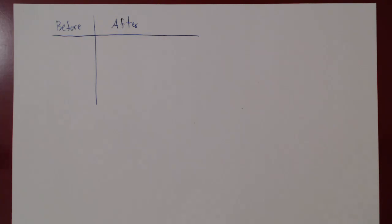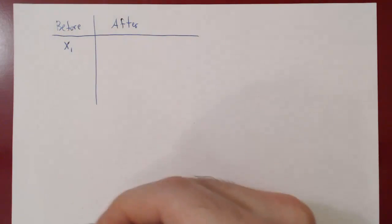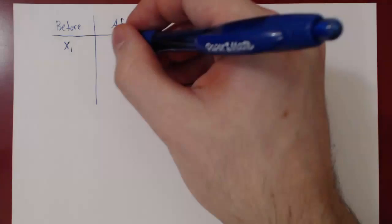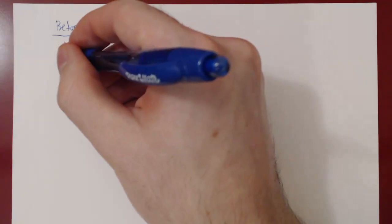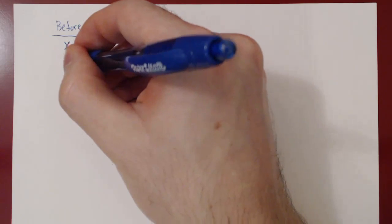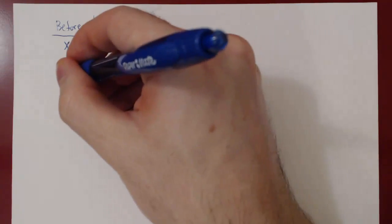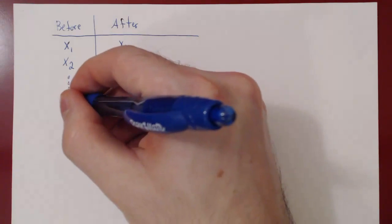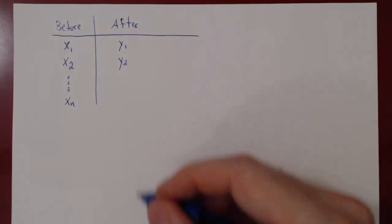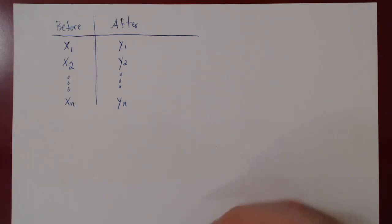We are going to ask simply, did the experiment have an impact on the measurements? Suppose that person 1 scores x1 before the experiment and scores y1 after the experiment. Suppose person 2 scores x2 before the experiment, y2 after the experiment. Suppose we have a sample of n people, so person n scores xn before the experiment and scores yn after the experiment.